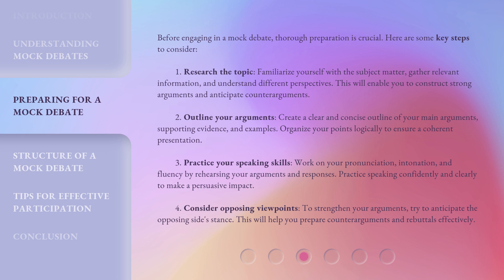Step 2: Outline your arguments. Create a clear and concise outline of your main arguments, supporting evidence, and examples. Organize your points logically to ensure a coherent presentation. Step 3: Practice your speaking skills. Work on your pronunciation, intonation, and fluency by rehearsing your arguments and responses. Practice speaking confidently and clearly to make a persuasive impact.